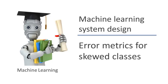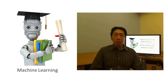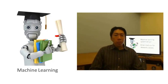In the previous video, I talked about error analysis and the importance of having error metrics — that is, having a single number evaluation metric for your learning algorithm to tell how well it's doing. In the context of evaluation and error metrics, there's one important case where it's particularly tricky to come up with an appropriate evaluation metric for your learning algorithm: the case of skewed classes.